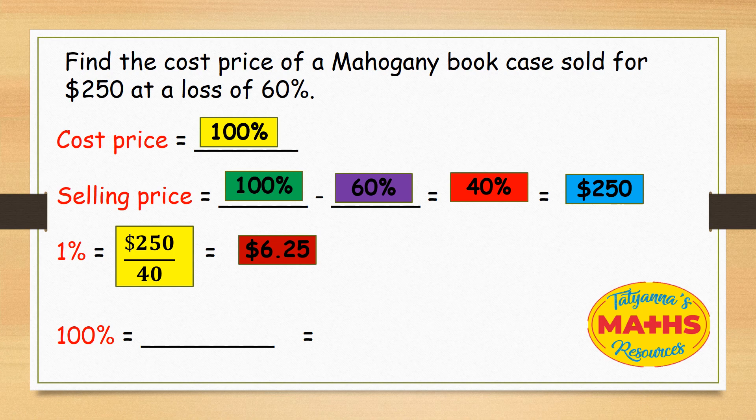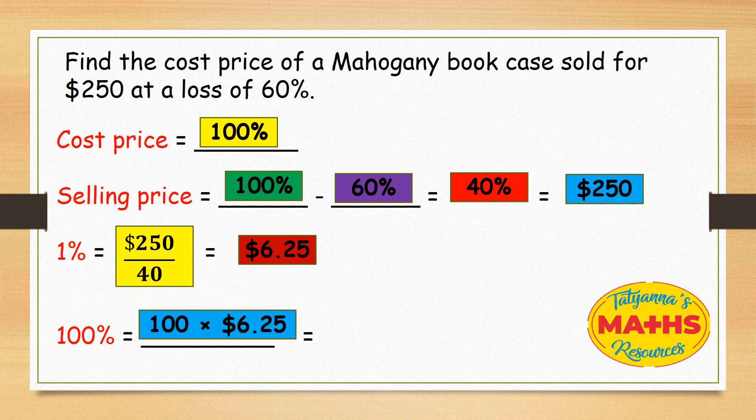So the cost price — the original price of this mahogany bookcase — was $6.25 multiplied by 100, which gives us $625. So this bookcase's original cost was $625, and it was sold for $250.